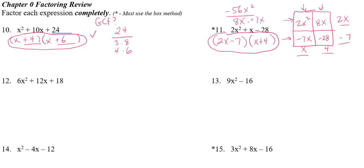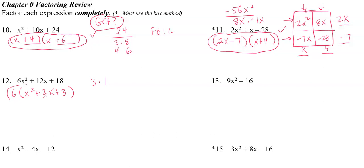Number twelve — always check for GCF first. There is a GCF of 6. Factoring out 6 gives 6(x² + 2x + 3). Now see if more factoring is possible: find factors of 3 that add to 2. Three is prime with only factors 1 and 3, and 1 + 3 = 4, not 2. Therefore, the only factoring that can be done is factoring out the GCF. We are finished.